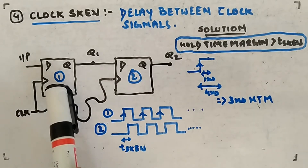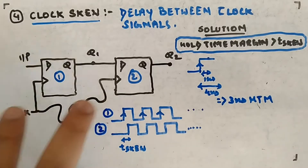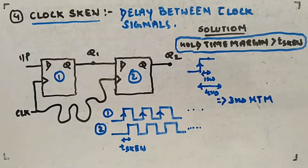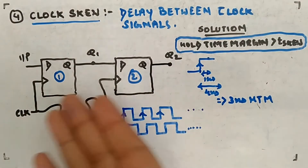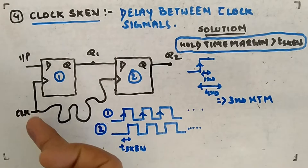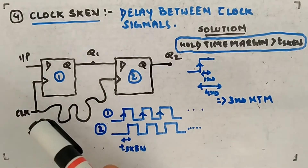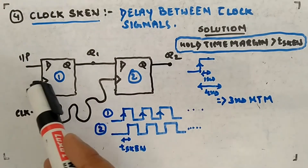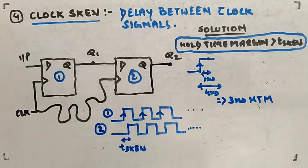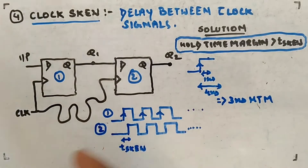The clock signal was supposed to go to both flip-flops simultaneously, but practically some problem occurs and there will be some delay for the other one. This curve I've drawn represents that some delay is there — the signal is reaching at the same time for the first flip-flop, but not for the second one. Ideally the same signal should reach both, but practically different signals are being fetched at each.